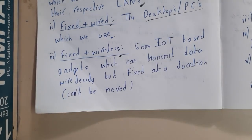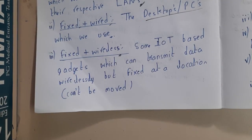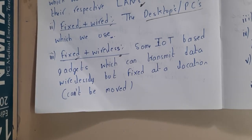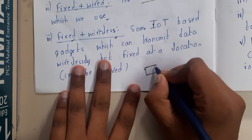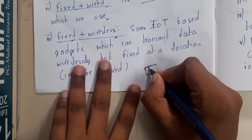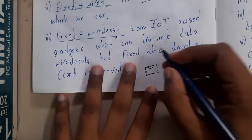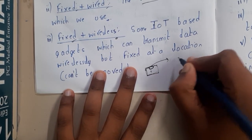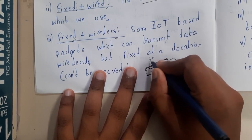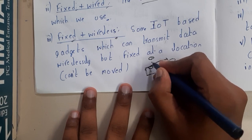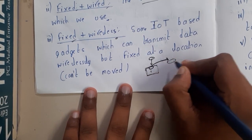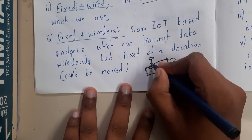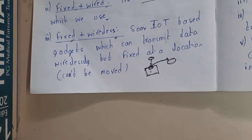For fixed and wireless, many of us now use IoT devices — smart home systems. These are fixed at some position. For example, in a hotel room or corridor there is a smoke detector. When it detects smoke, it sends information wirelessly — connected to the hotel Wi-Fi — to alert a particular person. The device is fixed in location but its connection is wireless. This is how some IoT devices function.